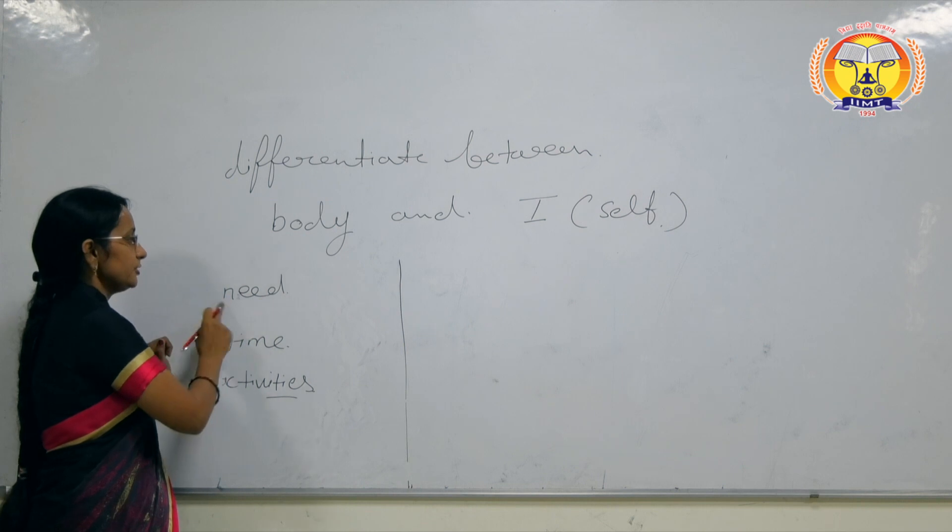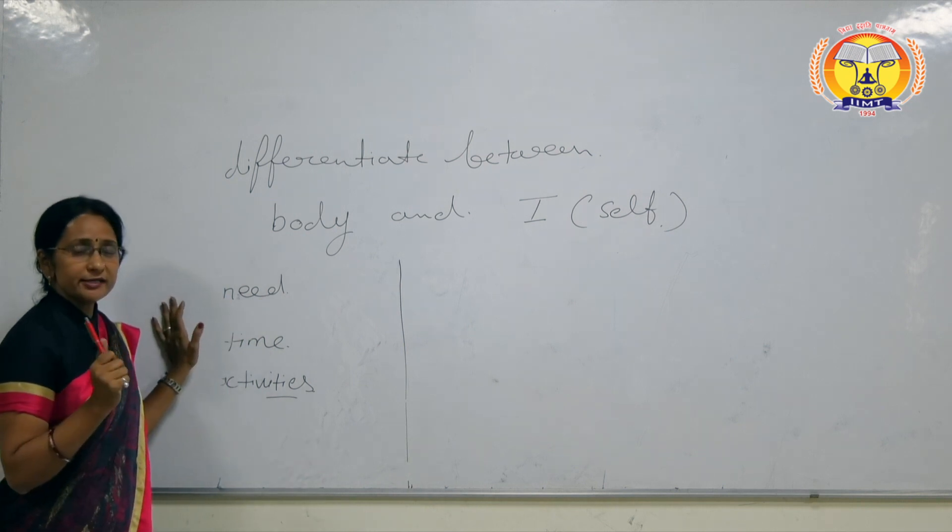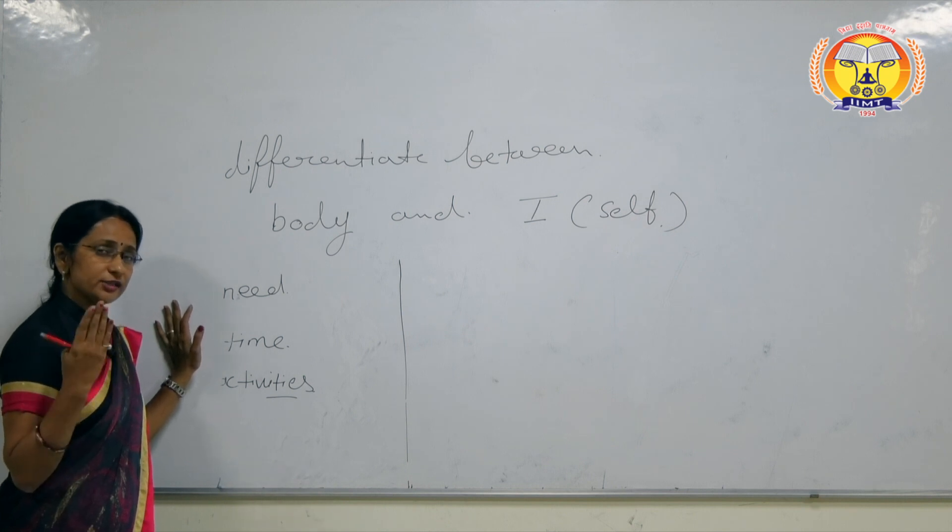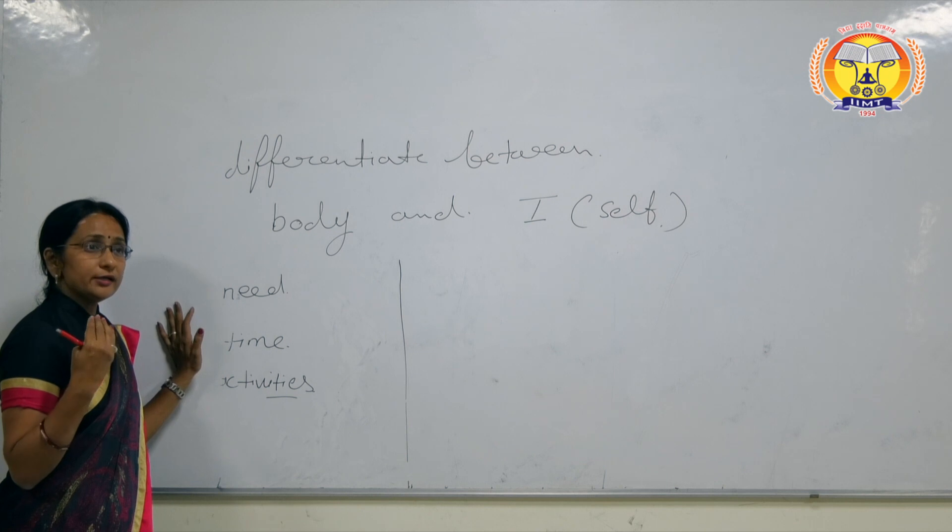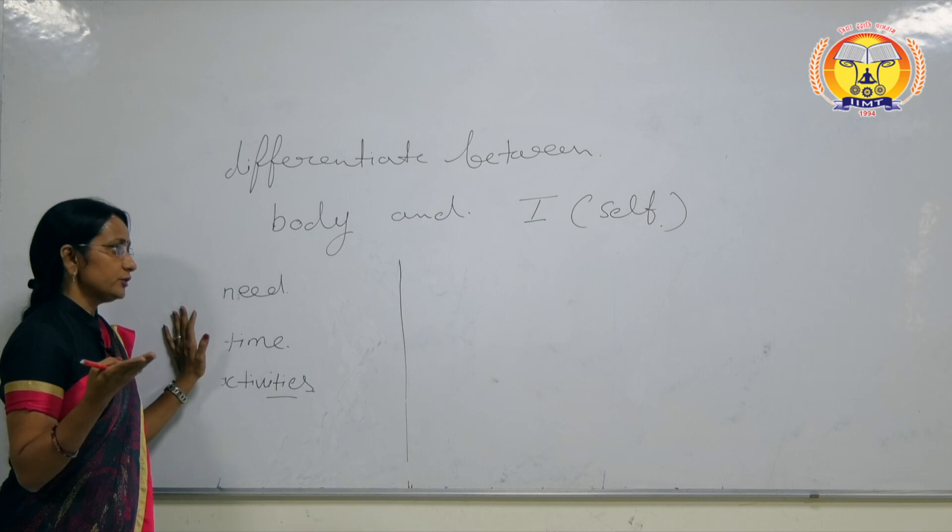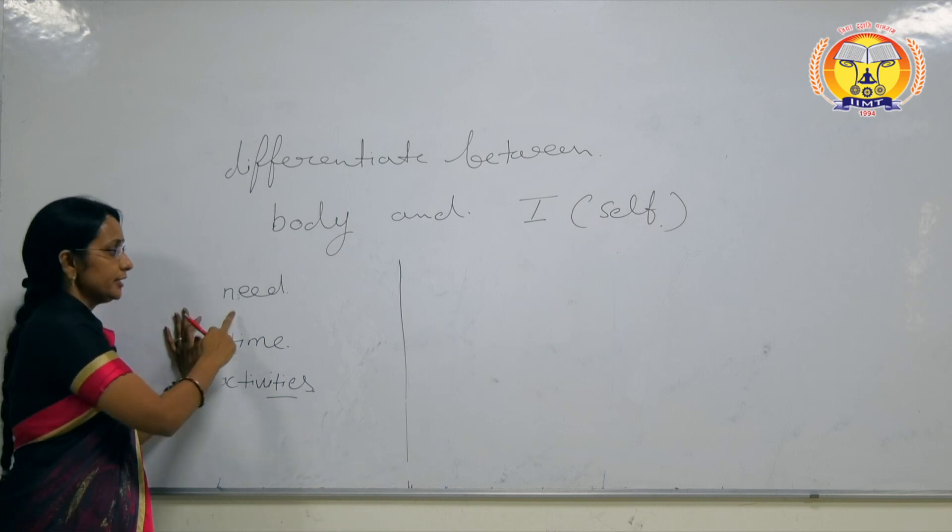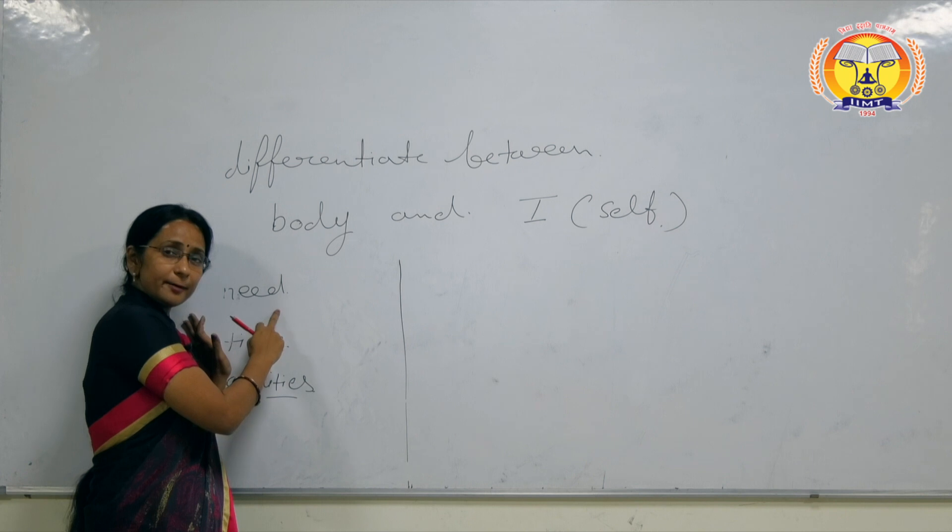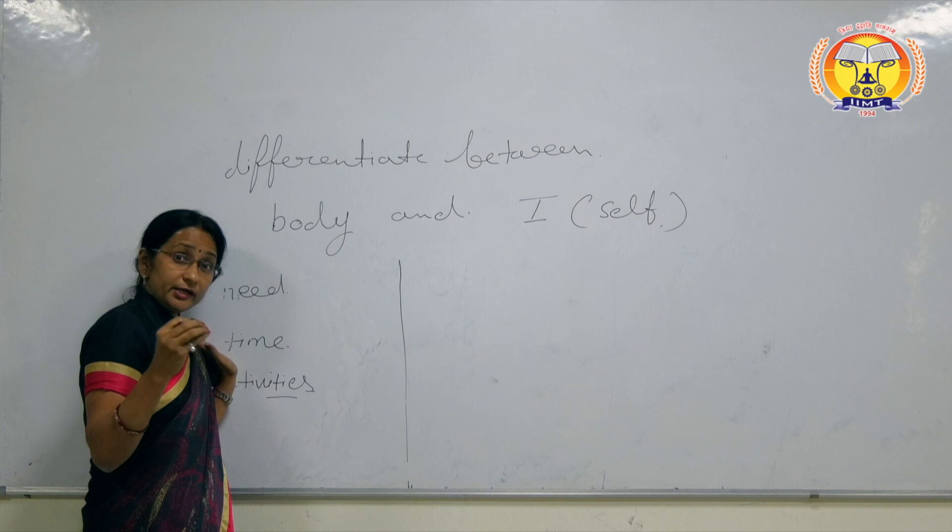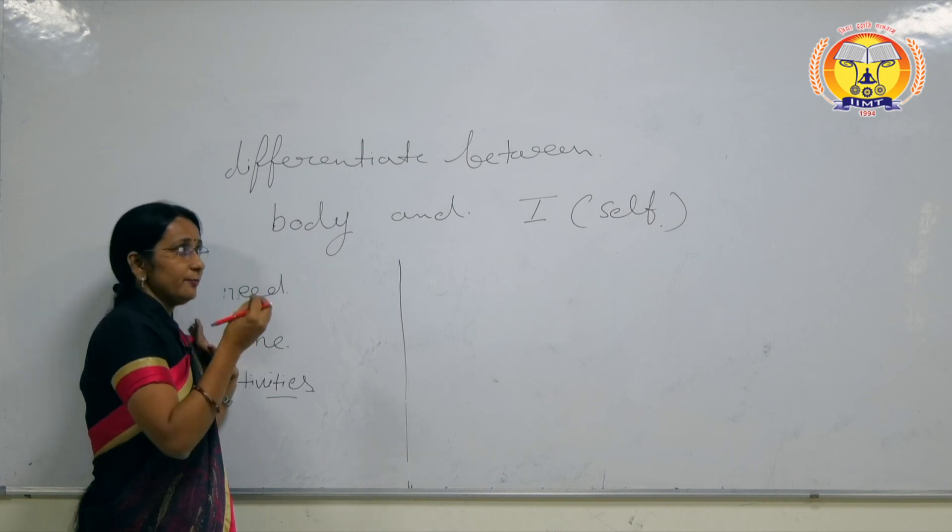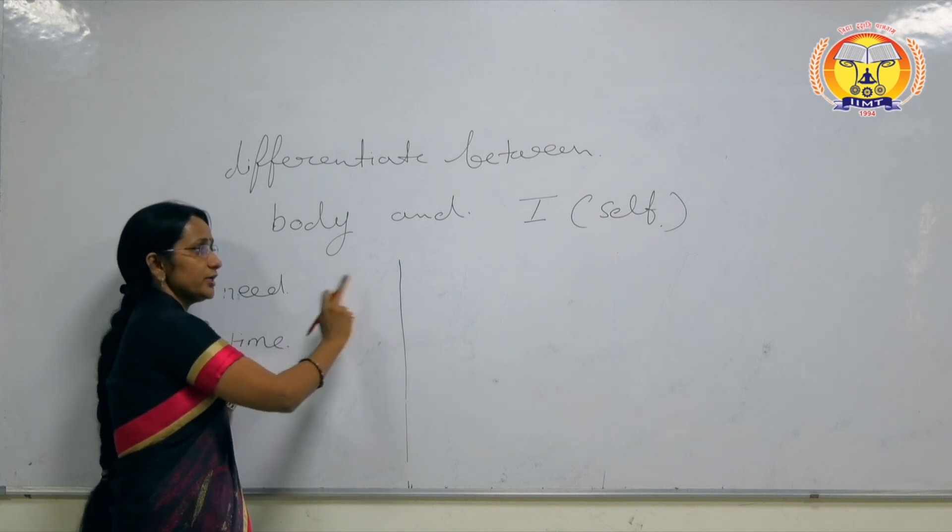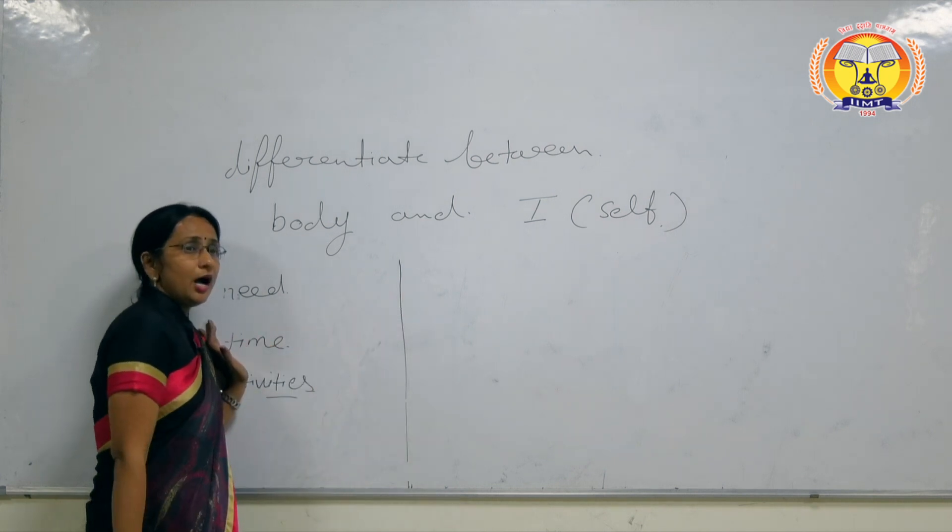Need can be understood through time. Time means temporary and permanent. Temporary needs are for body, permanent needs are for self. If we merge all activities, what are the activities for body, what are the activities of I, and what are the activities for both, we can distinguish.